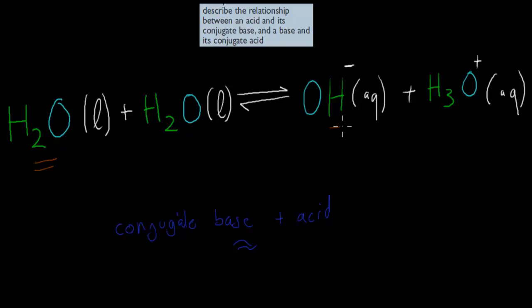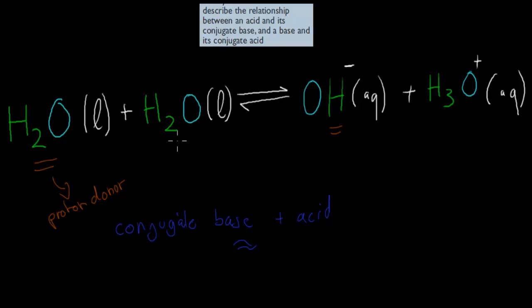This molecule is the same as this one, the difference being there's one fewer hydrogen, which means one fewer proton. So in this case, this is the proton donor — it has donated a proton. And the opposite one over here was a water molecule but is now a hydronium ion, so it has taken one extra hydrogen — it's the proton acceptor.